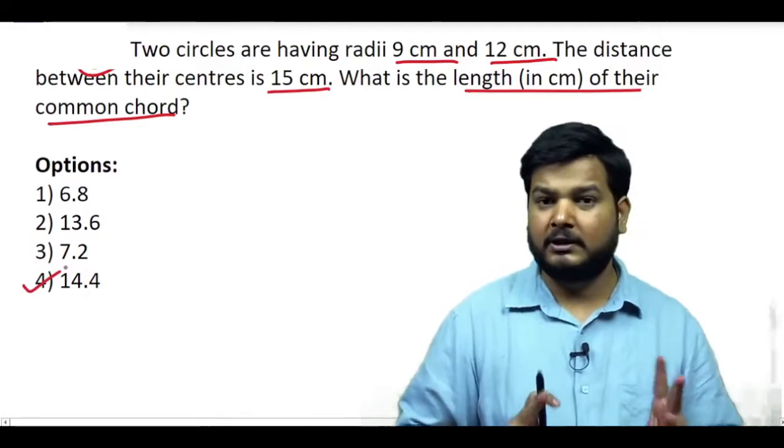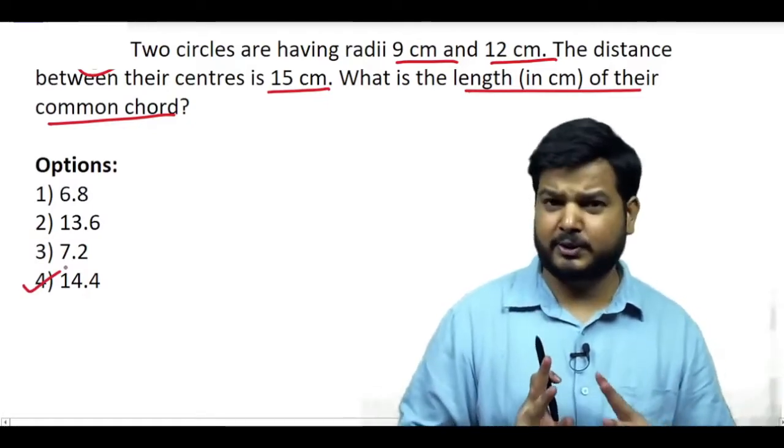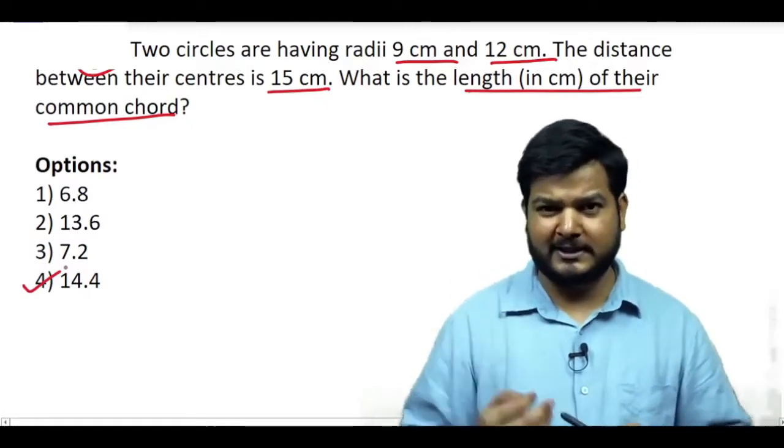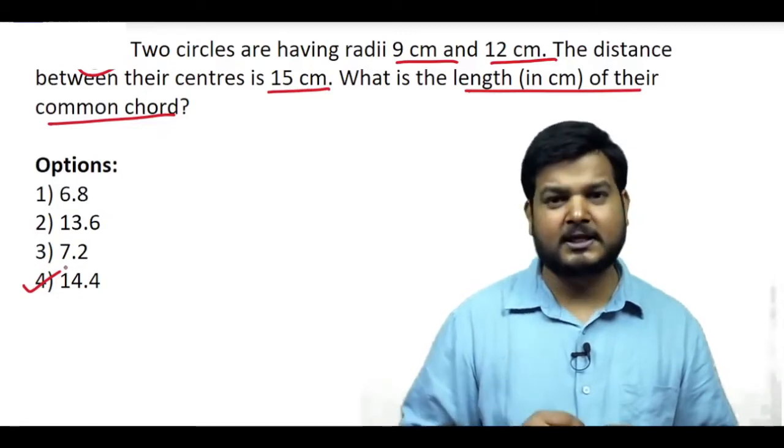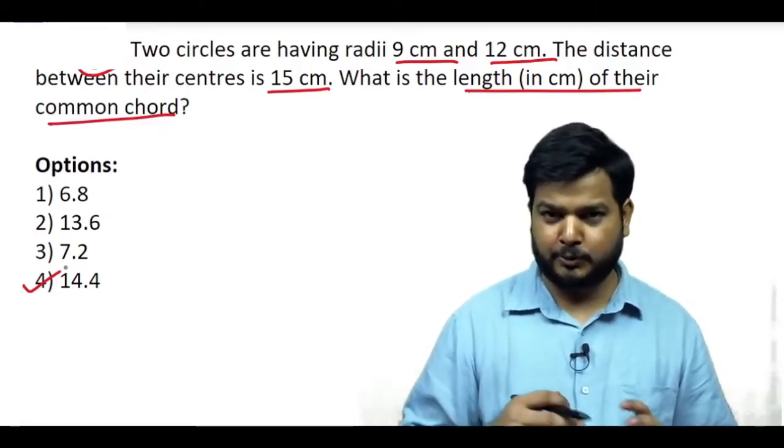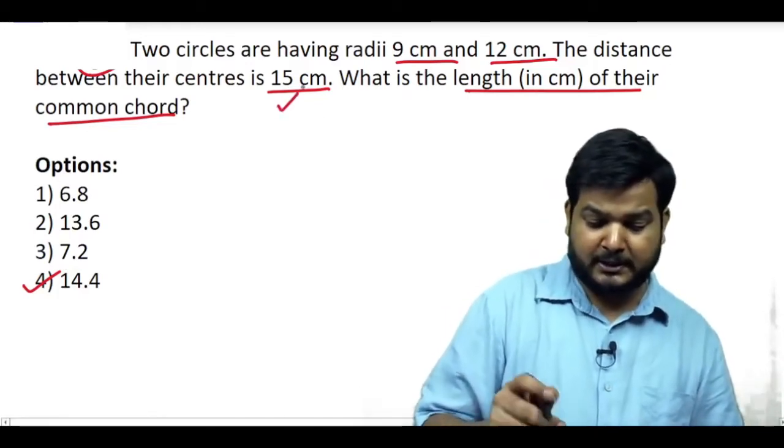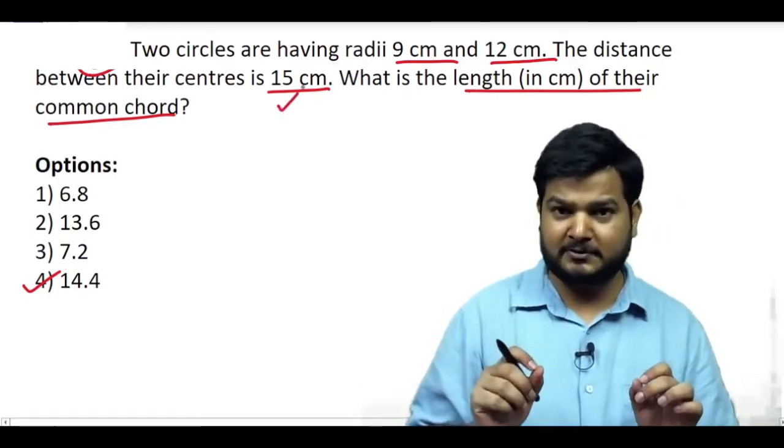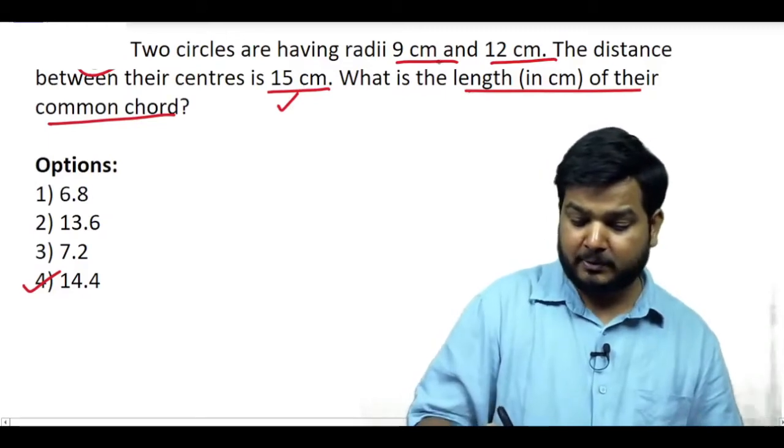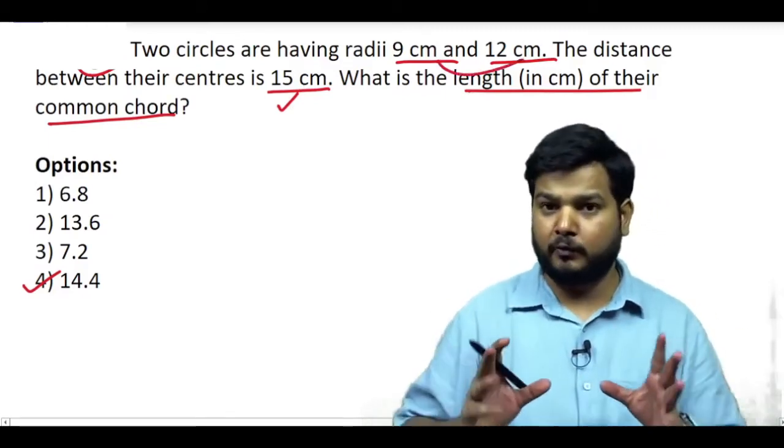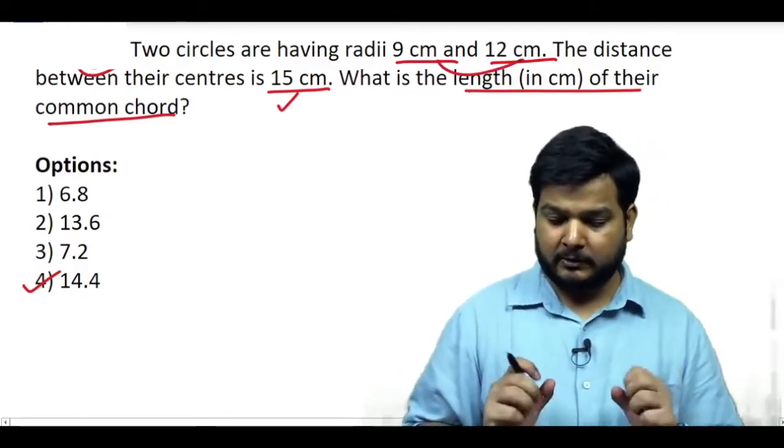Do cheezo ki zarurat hai is question ko karne ke liye. Agar fata-fata diagram visualize kar lero aur saath mein ek cheez ka visualization hai jo is question ko aasan bana raha hai. Sabse pehle cheez toh yeh ki jab maine yeh dekha ki inke beech ki centers ke distance 15 centimeter hai jabki unke radius ka agar aap sum nikaloge toh wo 21 aa raha hai.